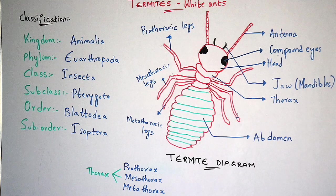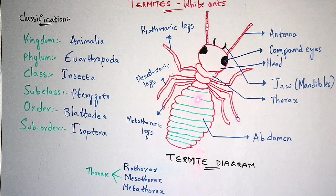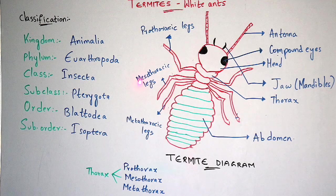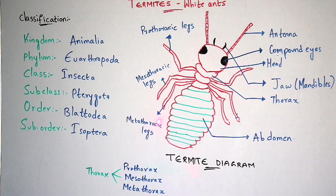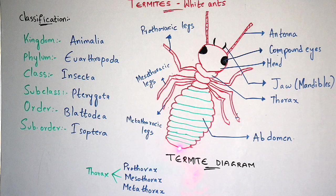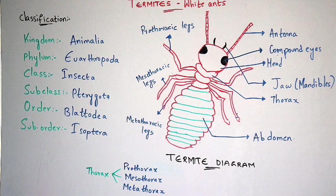The thorax is divided into three parts: prothorax, mesothorax and metathorax. One pair of legs arises from each thorax region. The legs from the prothorax are prothoracic legs, from the mesothorax are mesothoracic legs, and from the metathorax are metathoracic legs. This is the abdomen region, this is the thorax, and this is the head region, which consists of compound eyes and antennae. This is about the structure and diagram of the termite.